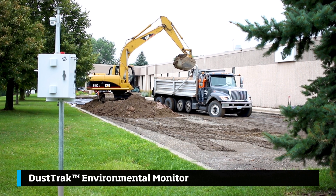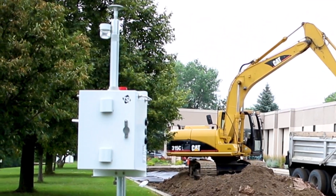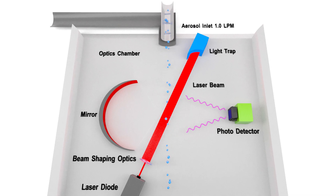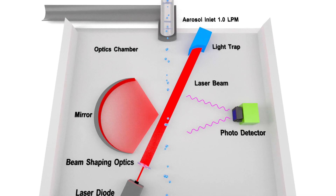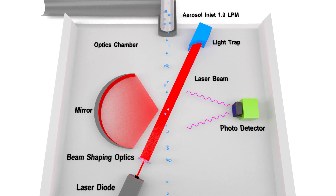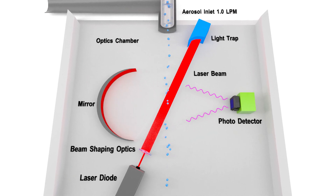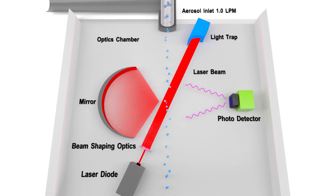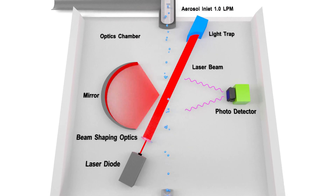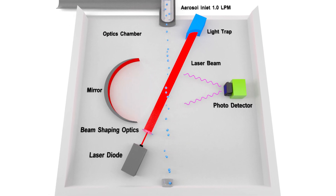At a basic level, the particles are pulled into the instrument through a pump. A laser shines light onto the particles, which creates light scatter. This photometer is used to determine the concentration of the aerosol in milligrams per meter cubed. This type of instrument is widely used in the aerosol monitoring industry, which ultimately helps protect workers and surrounding communities.